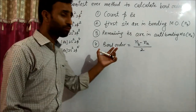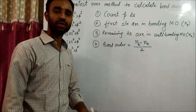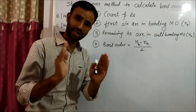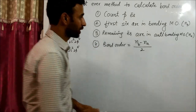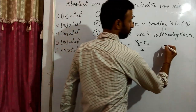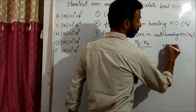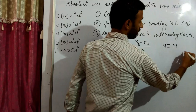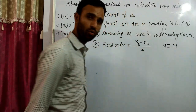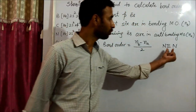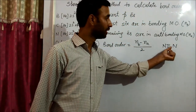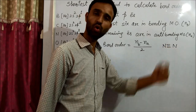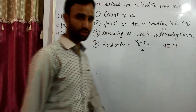Bond order is the number of bonds between two atoms. For example, if we talk about N2, in N2 the bond order is three — that is the number of bonds between two nitrogen atoms.